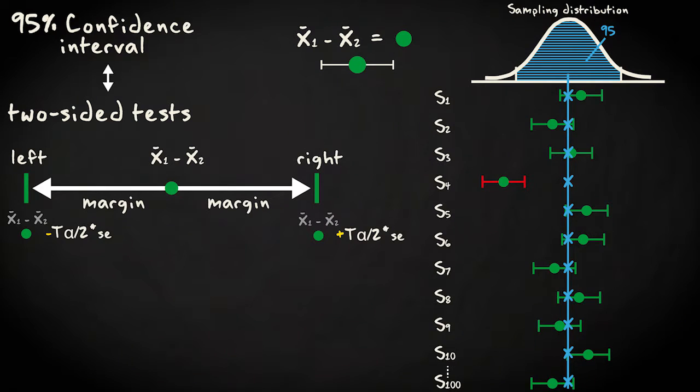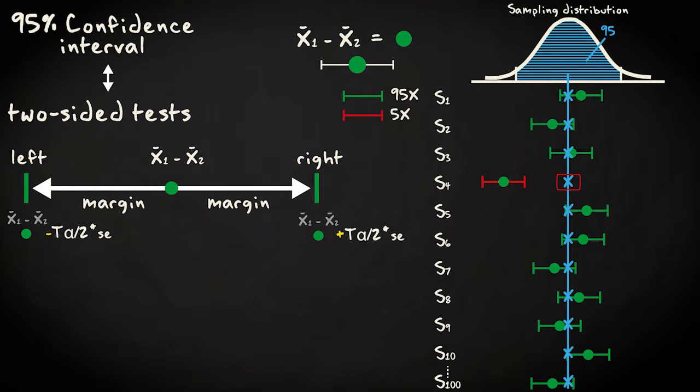With repeated sampling, 95% of the confidence intervals will contain the true population parameter. The true value will lie beyond these boundaries only in 5% of the samples.